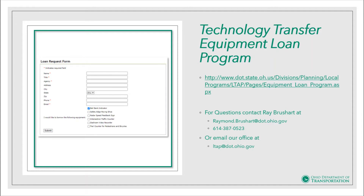Pickup of the equipment is the responsibility of the requesting agencies. Items can be shipped so long as they are properly insured. The agency is responsible for maintaining proper care of the equipment and for properly packaging and shipping or delivering the equipment back to our office by its due date. All risk of loss is on the borrowing agency and damaged equipment must be repaired or replaced.